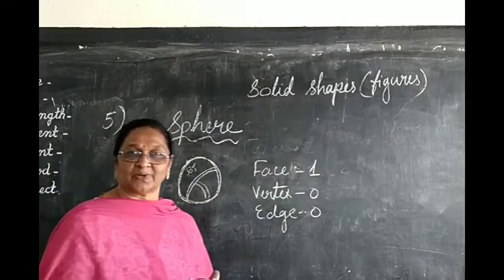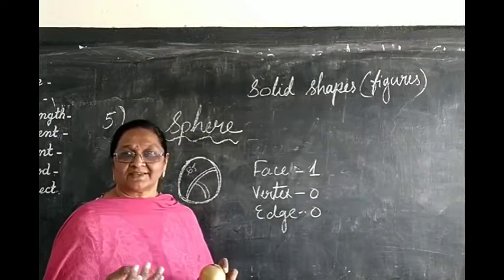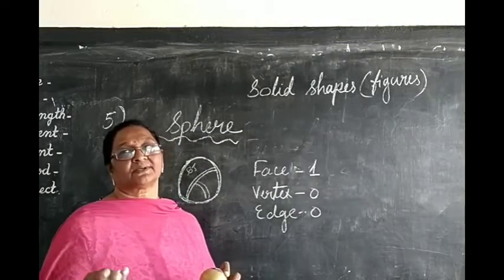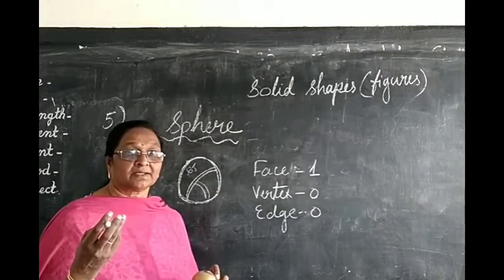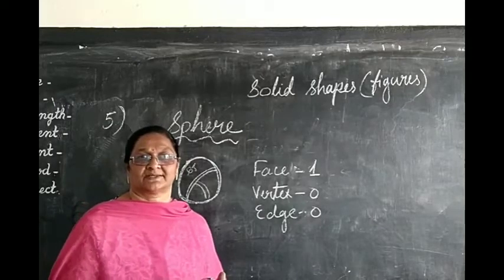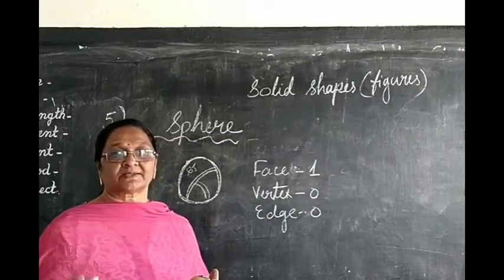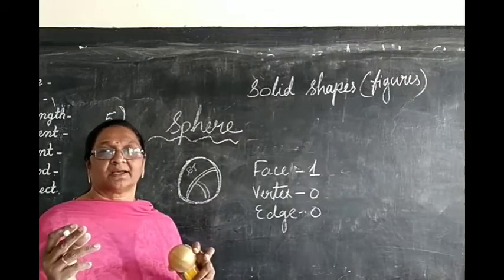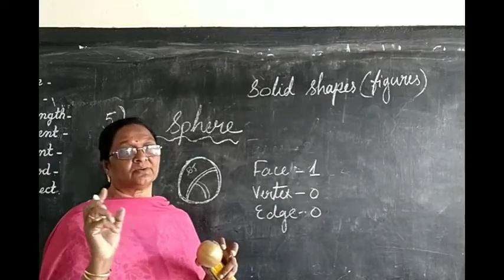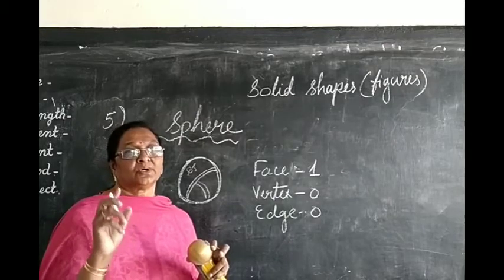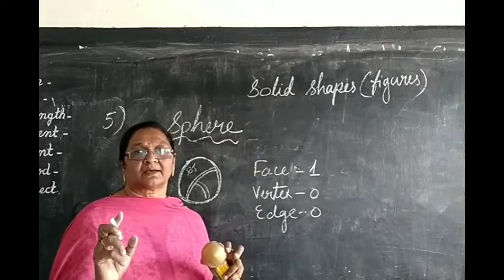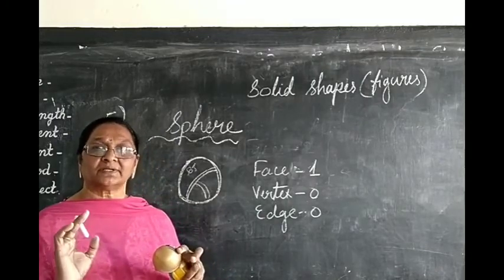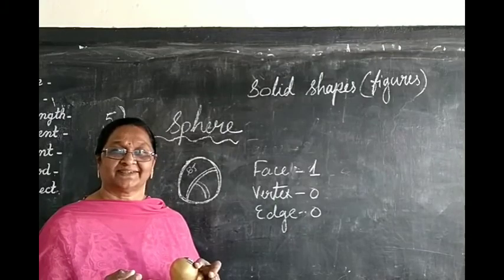In today's class we have learned about cube, cuboid, cylinder, cone, and sphere. Cube and cuboid have the same features: six faces, eight corners, and twelve edges. Cylinder has three faces — two plain and one curved — no vertices, and two edges. Cone has two faces, one vertex, and one edge. And the sphere has only one curved face, no corners, and no edges. I hope it is clear to all. Thank you, children.